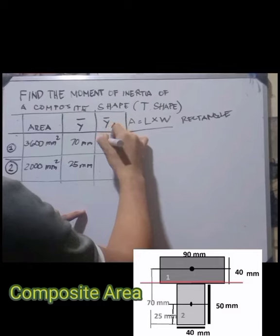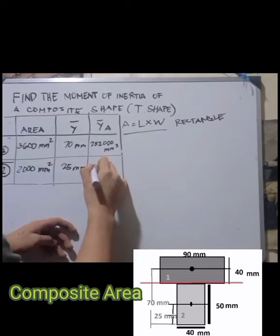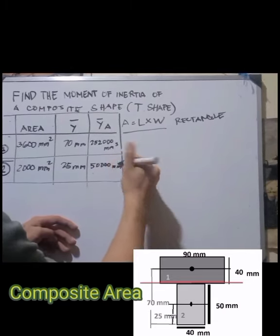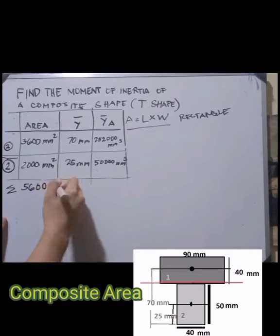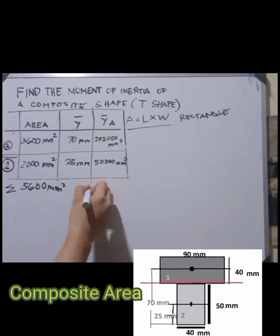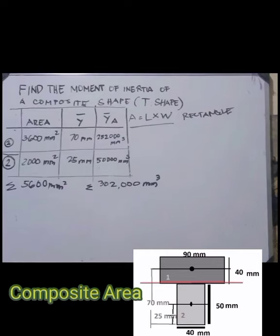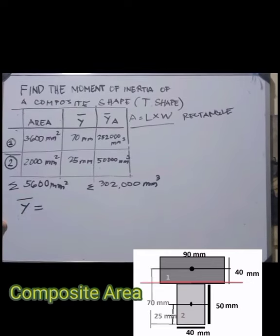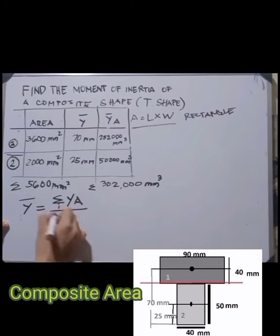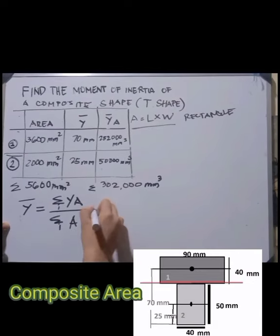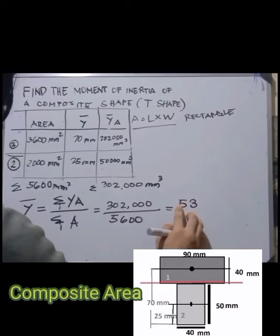Multiplying ȳ times area: the first rectangle gives 252,000 mm³ and the second gives 50,000 mm³. The total summation of areas is 5600 mm², and the summation of ȳ·A is 302,000 mm³. Therefore, ȳ = 302,000 / 5600 = 53.92 mm, approximately 54 mm.